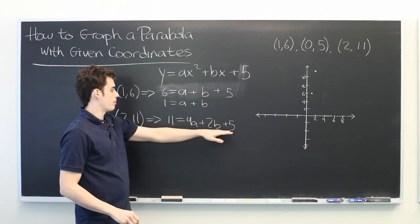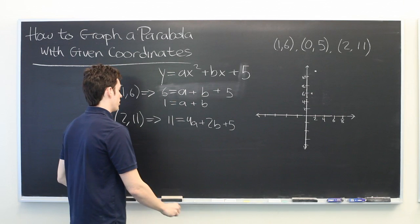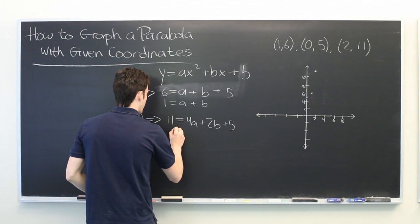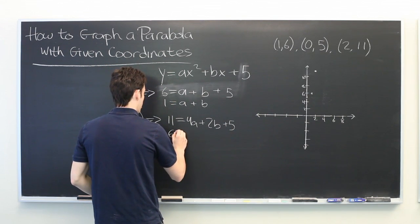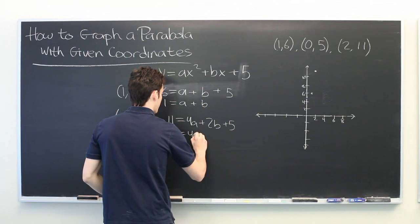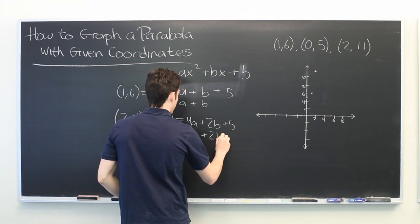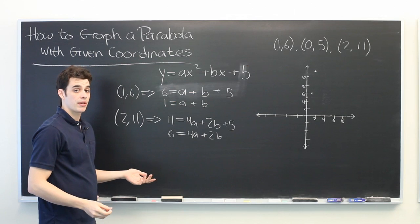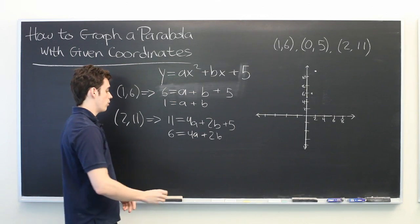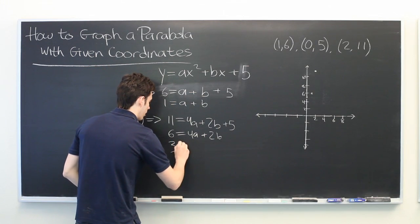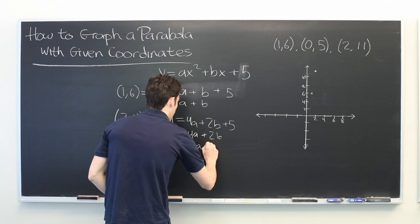And again, we'll simplify this by subtracting 5 from both sides. And what we get is 6 equals 4a plus 2b. We can simplify this a little bit further by dividing by 2 on both sides of the equation. 3 equals 2a plus b.